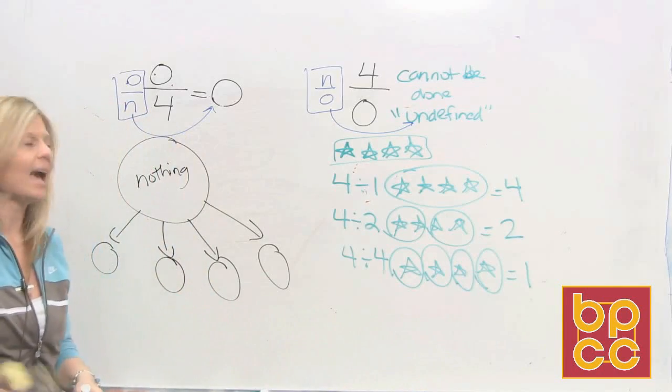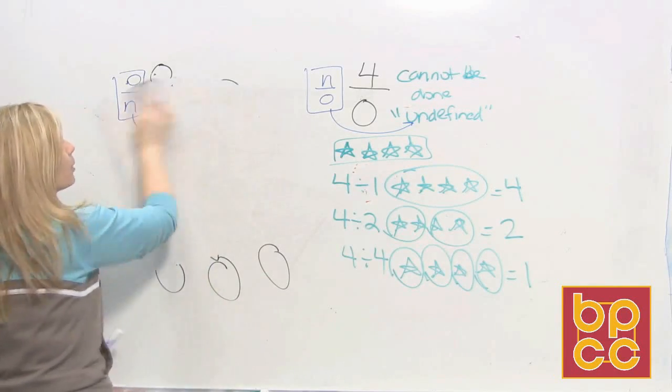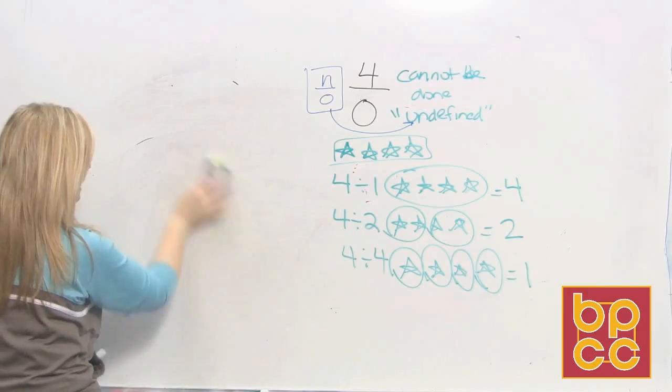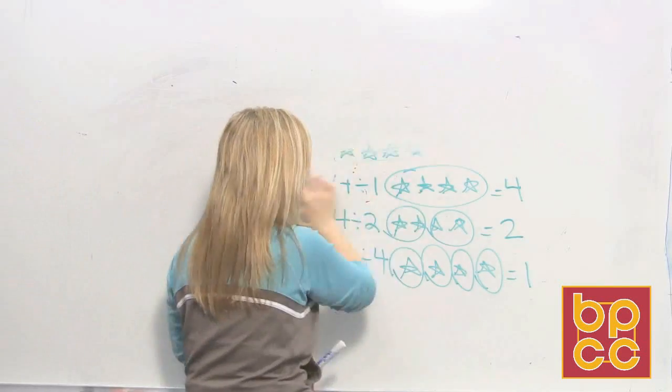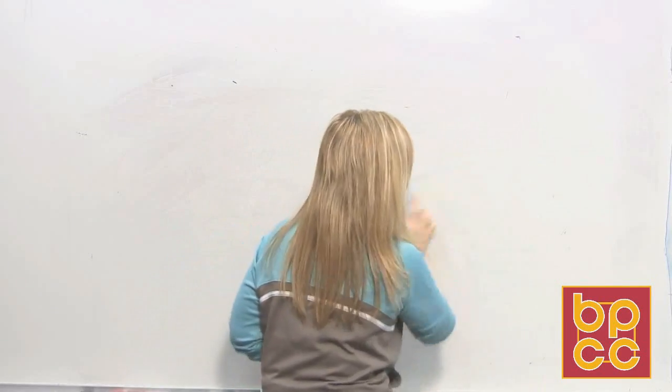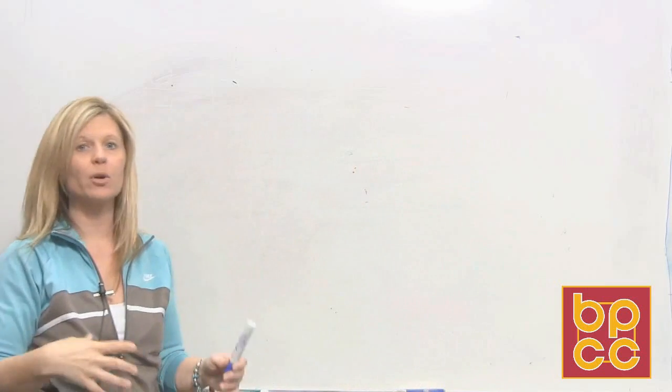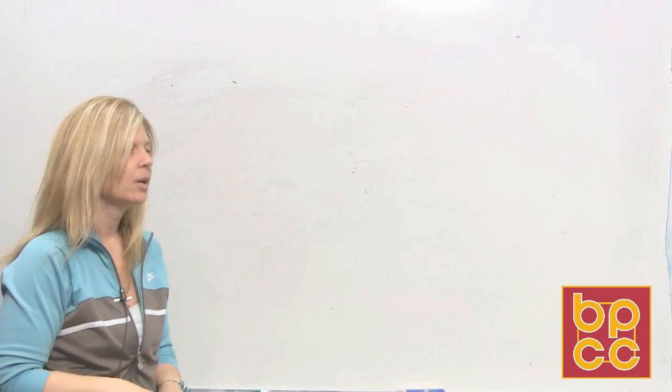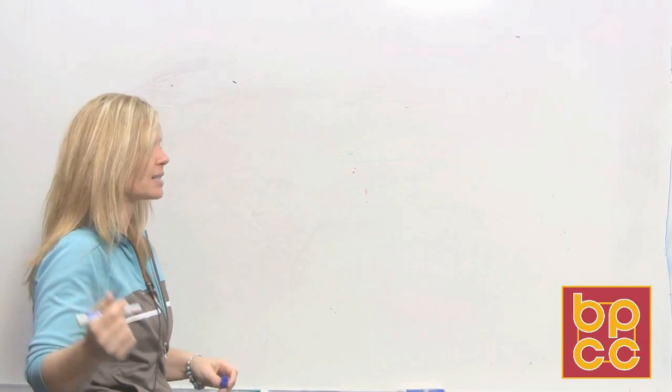Now, how does this relate to algebra? Well remember, variables, letters, represent numbers. So it's going to be important for us to know what number cannot be in the denominator. So let's go to our class notes and look at example 2.